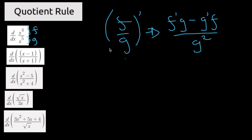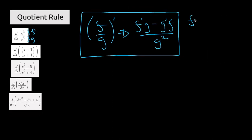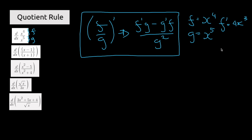For this example we need to define our terms like we did with the product rule. f is x to the power of 4, f prime is 4x to the power of 3, g is x to the power of 5, and g prime is 5x to the power of 4.